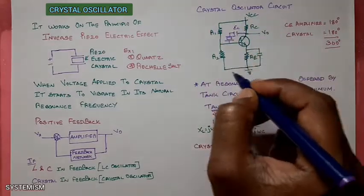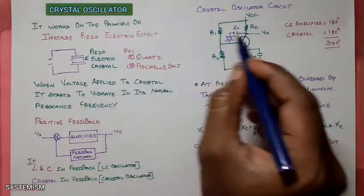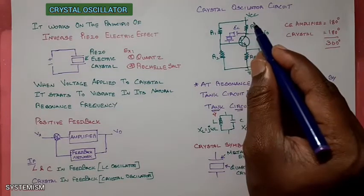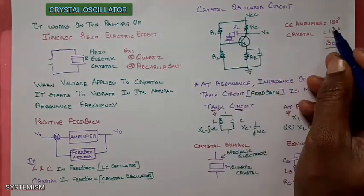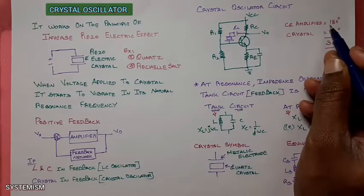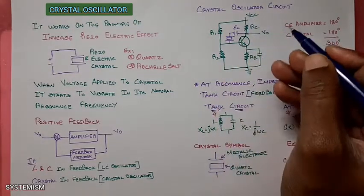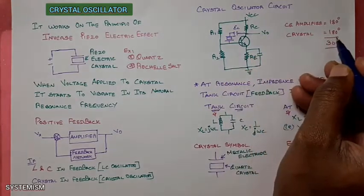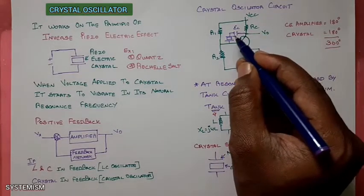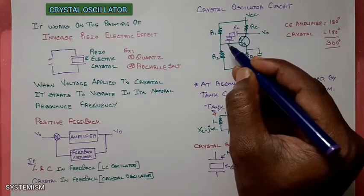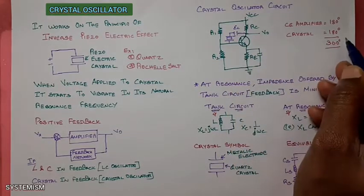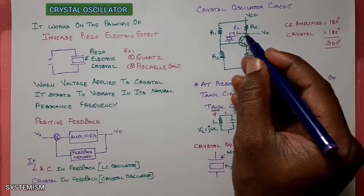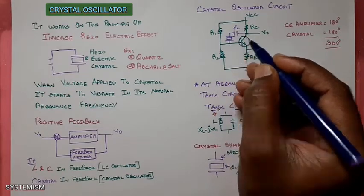This is a circuit for a crystal oscillator. We should know one more thing: the CE amplifier will always provide 180 degrees of phase shift. This amplifier provides 180 degrees phase shift. The crystal will again provide 180 degrees phase shift. Totally, the phase shift around this loop will be 360 degrees. This is the condition for positive feedback, so we are giving proper positive feedback in this circuit.